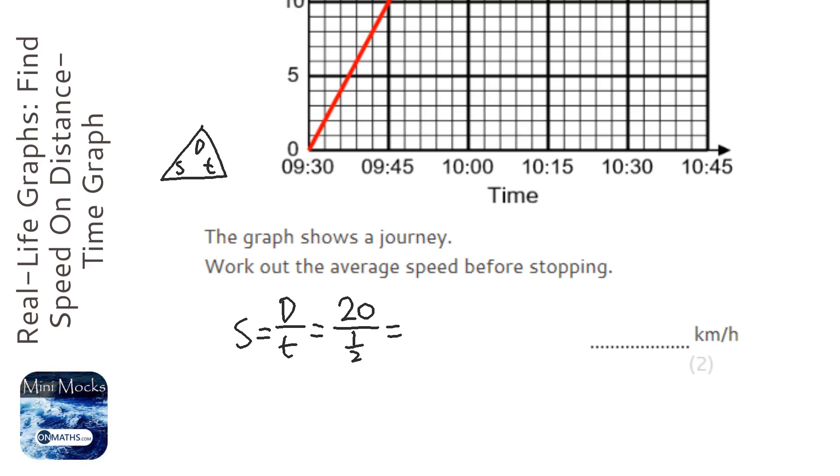Okay, so how many halves are there in 20? Well, 40. So what you can do is times top by 2, so it would be 40 over 1, which is just 40. So the answer is 40 kilometres per hour.